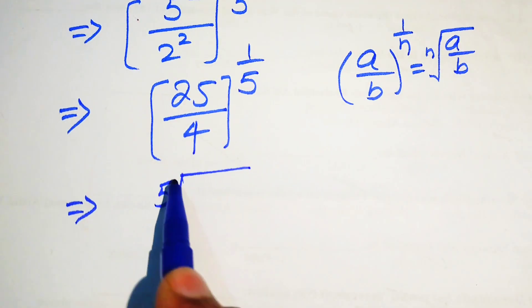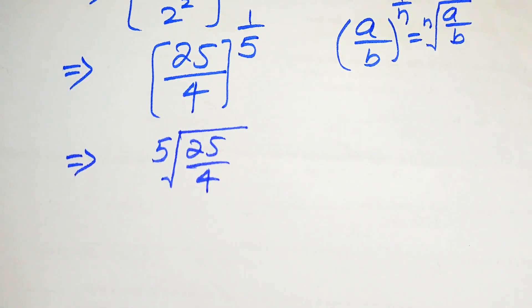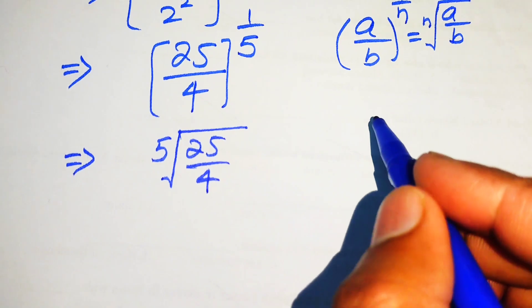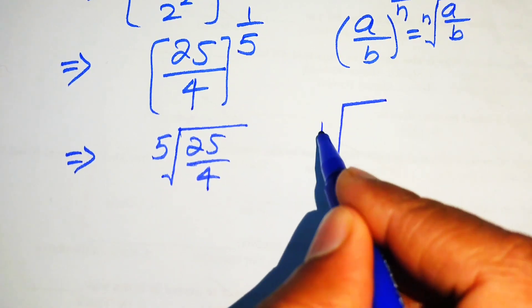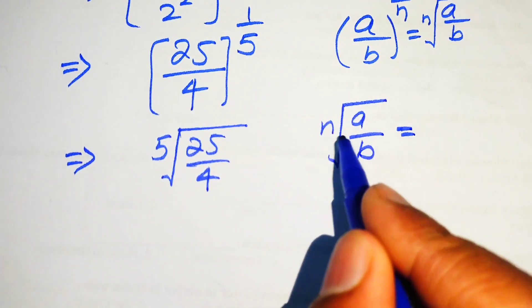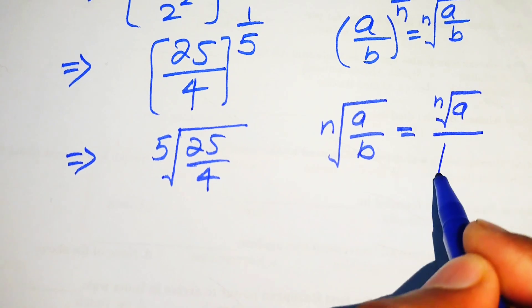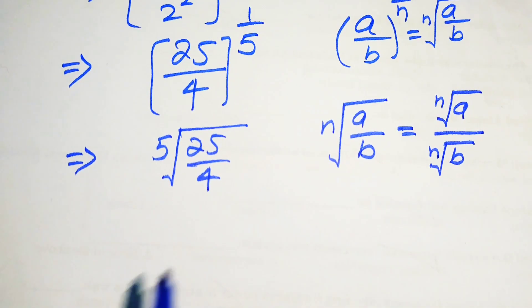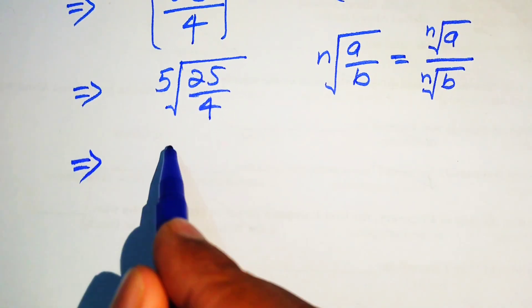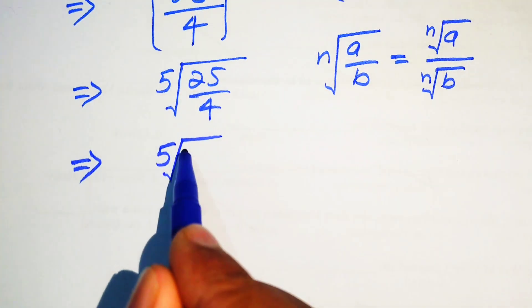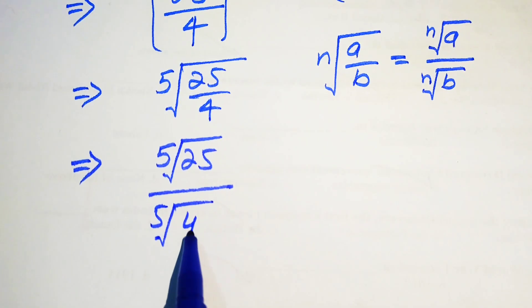Further, we use another radical law: if we have the nth root of (a/b), we write the nth root separately on both terms — nth root of a divided by nth root of b. According to this, we break this radical sign and write it as the 5th root of 25 over the 5th root of 4.